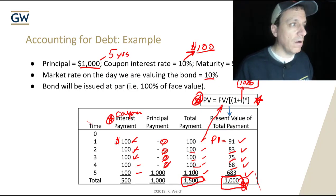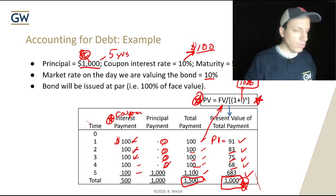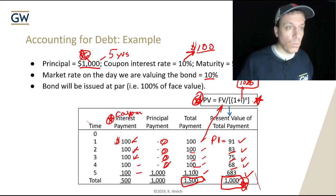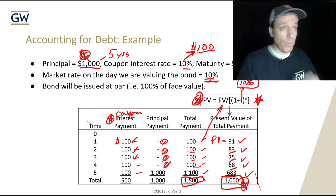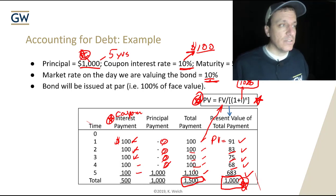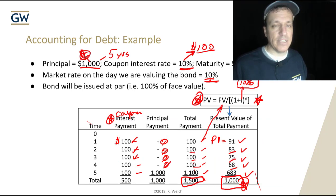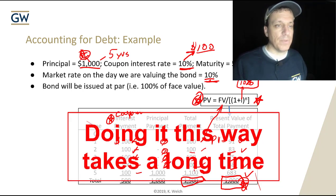A lot of you are going to be thinking: why did we just do all this? I could have told you there's $1,000 here and $1,000 up there without doing all these calculations. Well, you do need to, because we assumed our market rate was the same as the coupon rate. When that changes, it changes everything, and you end up with bonds valued at different rates. Doing it this way takes a long time, so we're going to use the calculator, but I wanted to show you the process of what's going on.